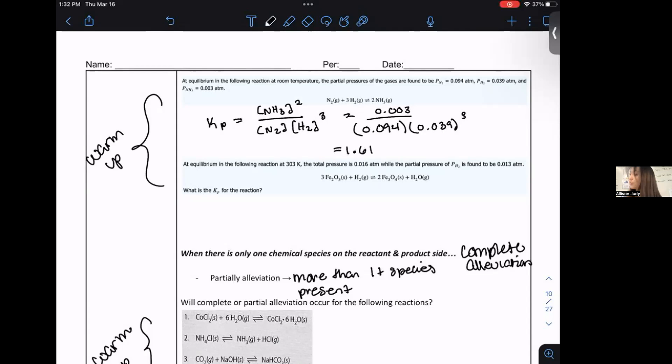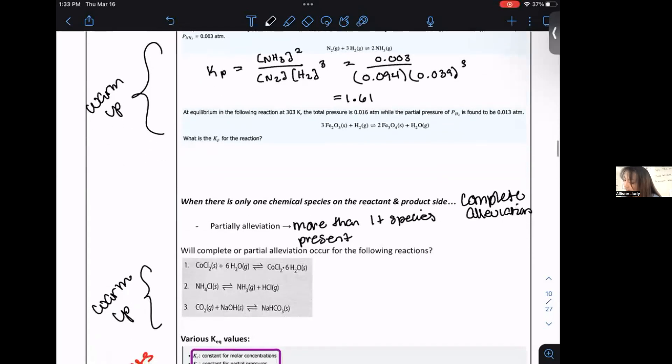And what you should have gotten was you should have gotten the following value being 1.61. And again, it is a no unit. So here we see that it's greater than one, K is greater than one. So at equilibrium, the equilibrium position, or if you want to use the analogy of a balance, the fulcrum is favored toward the side of the product. So at equilibrium, we have more product present than we do reactant.